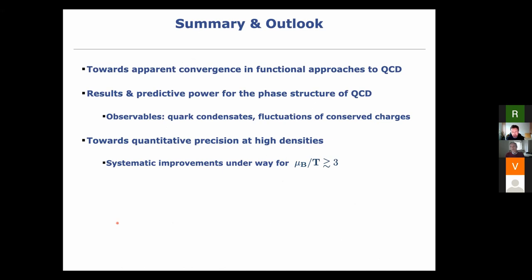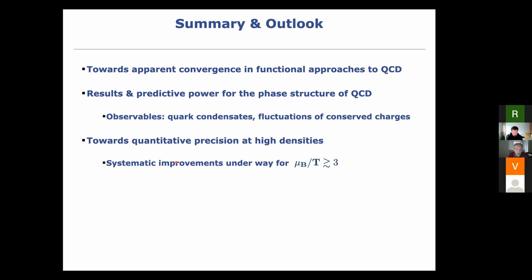In summary, I hope I've convinced you that we are really up to the game and coming towards apparent convergence in functional approaches to QCD. We can use this to get our hands on the phase structure of QCD at large densities. Systematic approximation improvements are underway for the region above μ_B/T ≈ 4. We have ongoing computations for fluctuations of conserved charges in the full setup, and we hope to have results soon. This approach also allows non-equilibrium investigations — heavy ion collisions is a non-equilibrium process — and we now have the possibility to work with real-time correlation functions for transport and transport coefficients.